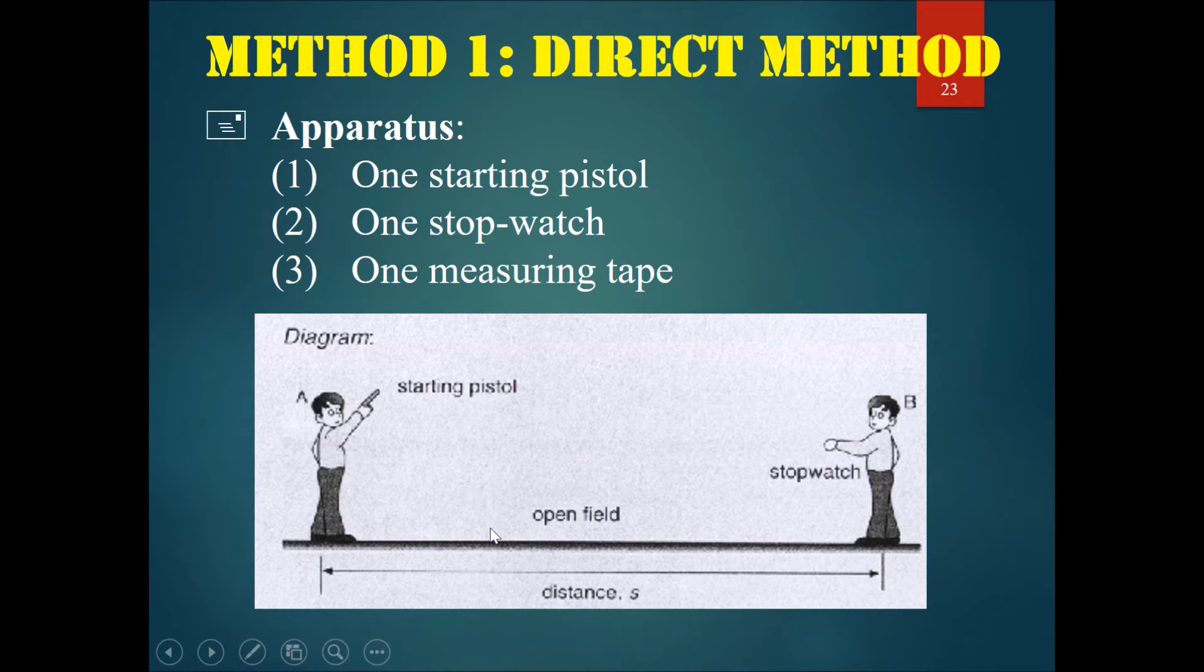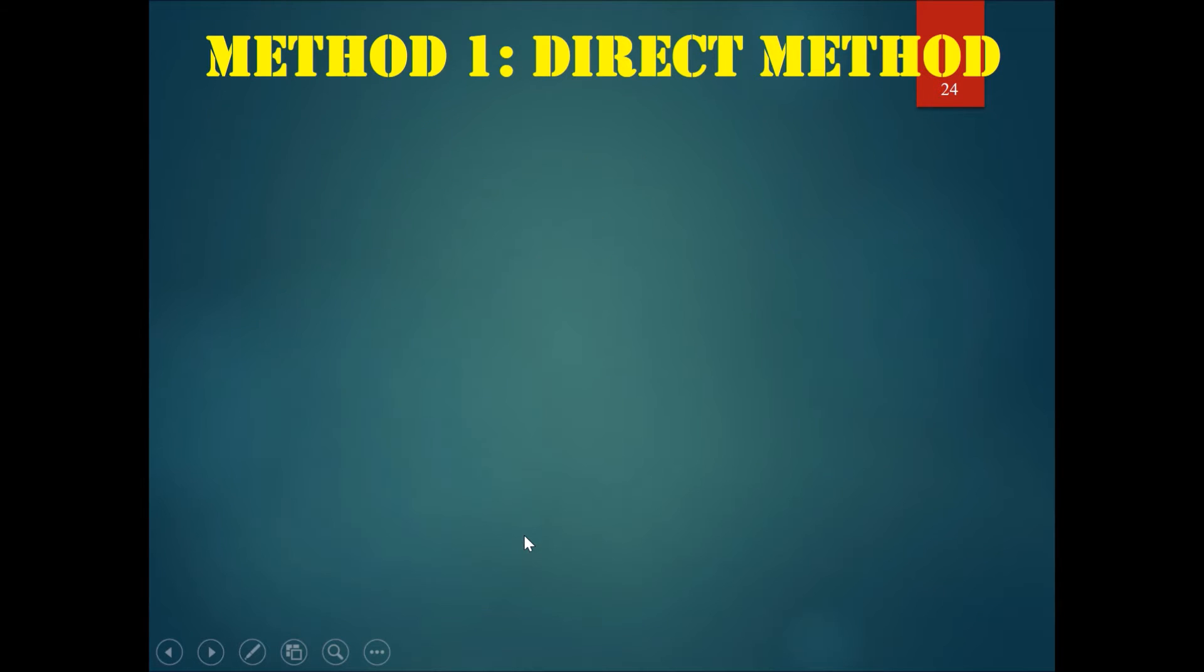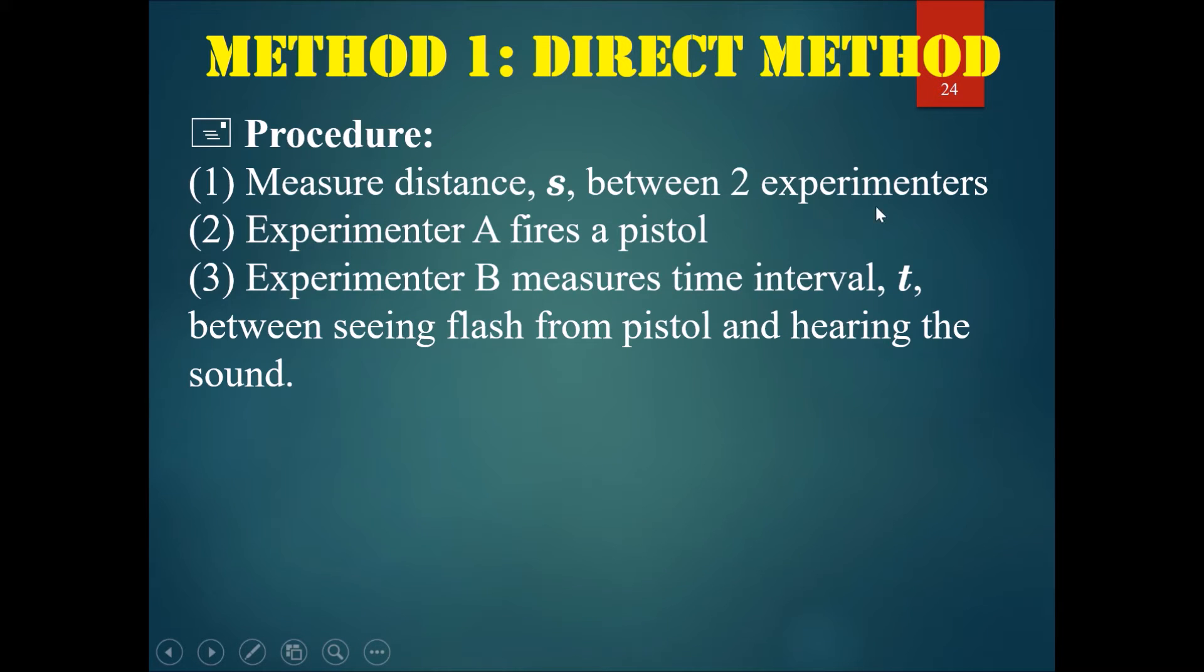Make sure there's a few kilometers of open field between them. Firstly, measure the distance s between the two experimenters. Experimenter A would fire the pistol. The pistol will emit a flash of light and a sound. The flash of light is seen instantly because light moves extremely fast, however the sound would travel quite slowly in the air as compared to the light.